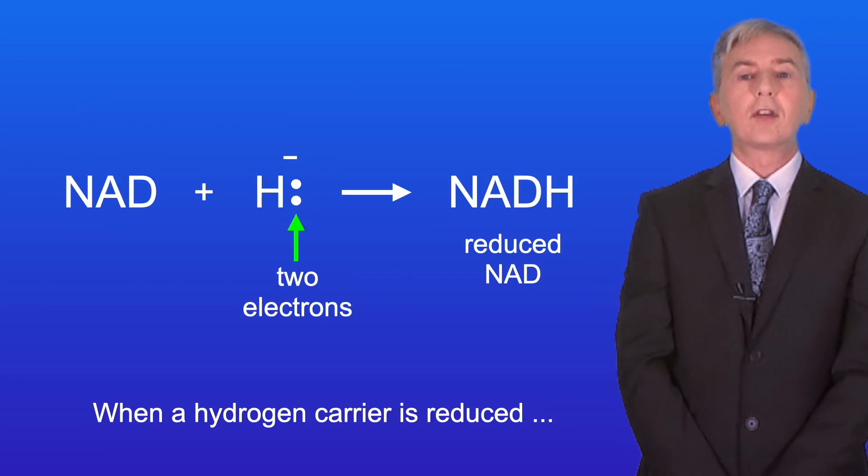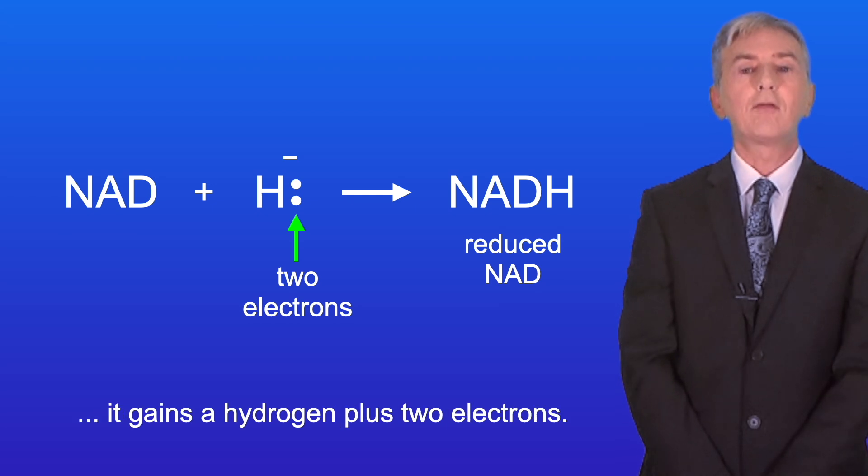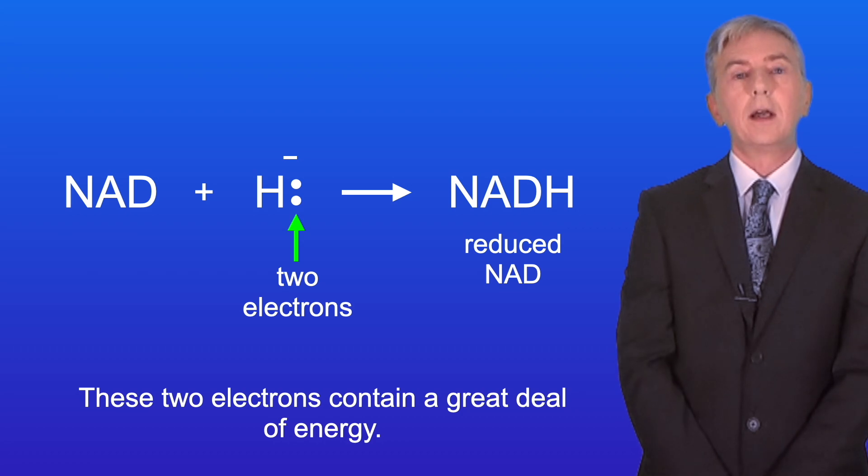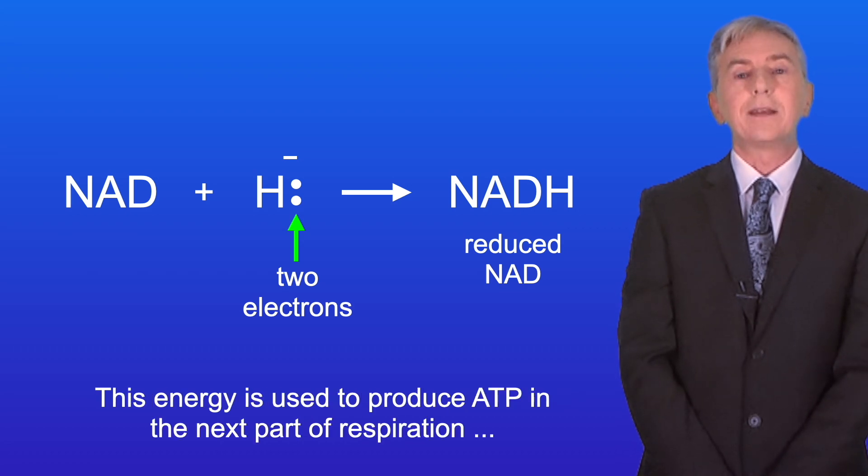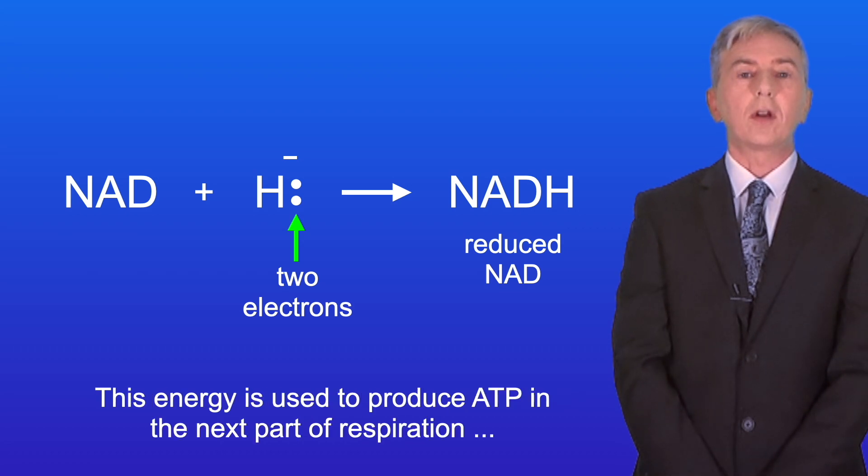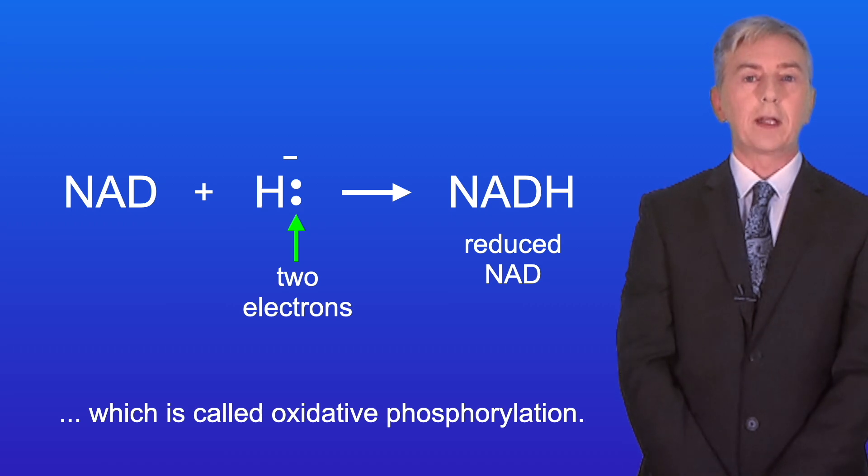Now when a hydrogen carrier is reduced, it gains a hydrogen plus two electrons. These two electrons contain a great deal of energy, and this energy is used to produce ATP in the next part of respiration, which is called oxidative phosphorylation.